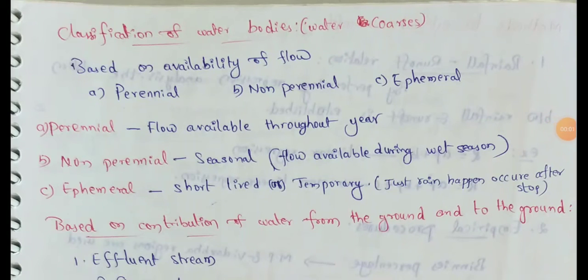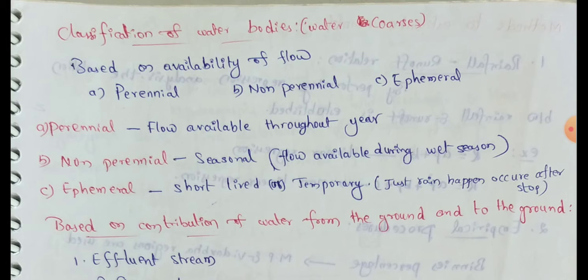Next topic: classification of water bodies, which means water courses. Based on availability of flow, we have three types of streams.